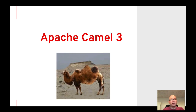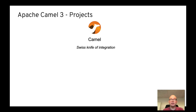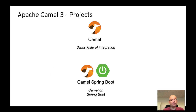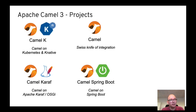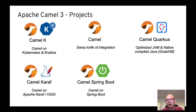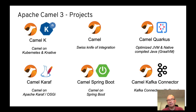To give you a quick overview of Apache Camel 3 and the products relevant to this presentation: we have Camel, the Swiss knife of integration; you can run Camel on Spring Boot; and there's Camel on OSGi. Then the three we'll focus on are: Camel K for serverless Camel on Kubernetes; Camel Quarkus, which is fast Camel also natively compiled with GraalVM; and finally Camel Kafka Connectors.